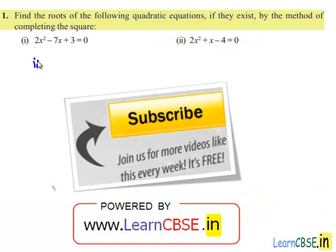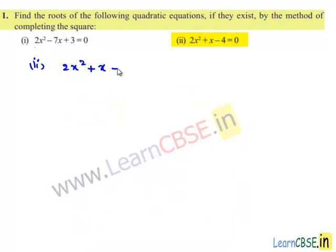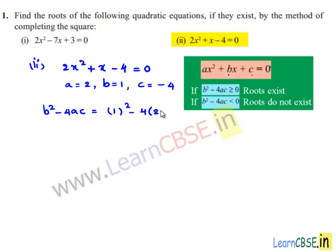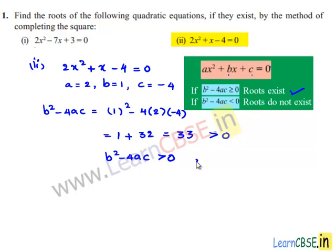Coming to the second problem: 2x² plus x minus 4 is equal to 0. Comparing with the standard equation ax² plus bx plus c equals 0, we get a is equal to 2, b is equal to 1, and c is equal to minus 4. Now let us find the discriminant b² minus 4ac. b² minus 4ac equals 1² minus 4 times 2 times (minus 4), which is 1 plus 32, equal to 33, which is greater than 0. Since b² minus 4ac is greater than 0, the roots exist.